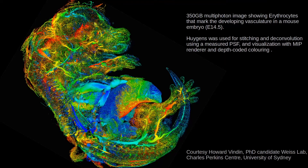Take for example this great 350 gigabyte multi-photon image of a mouse embryo. This image was acquired by Howard Finden and was deconvolved, stitched and visualized with depth coded coloring.